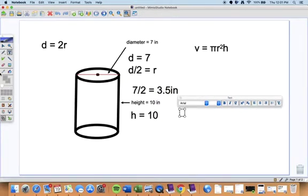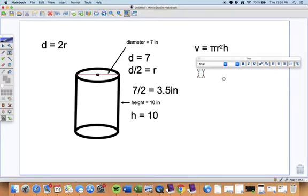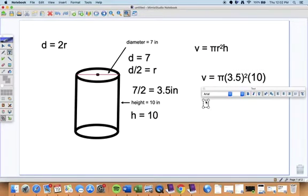And then we have everything we need to do the problem. So what we'll do then is we'll just plug away into our equation here. So we'll go volume equals pi times our radius is three point five, and we're going to raise that to the second power. And then we're going to multiply that by our height, which is ten.